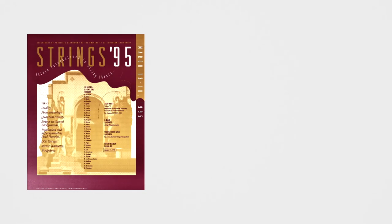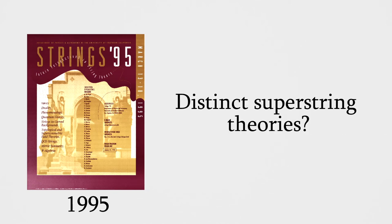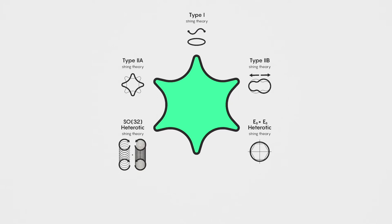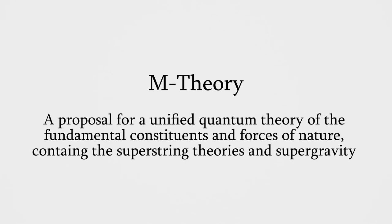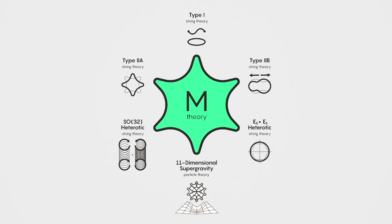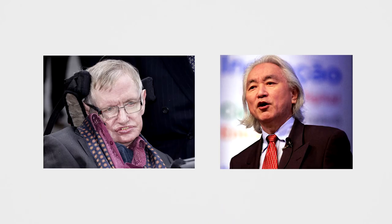Then, in a string theory conference at the University of Southern California in 1995, he suggested that instead of these string theories being distinct theories, they could in fact be cornerstones of a more fundamental theory called M-theory. This started a huge amount of work, which became known as the second superstring revolution. M-theory could be defined as a proposal for a unified quantum theory of the fundamental constituents and forces of nature, which contains within it the five superstring theories and supergravity. It has since been considered the best candidate we have for a theory of everything, by the likes of Stephen Hawking and Michio Kaku.